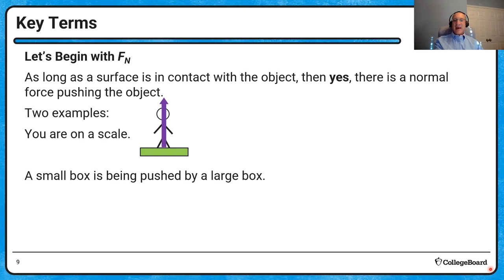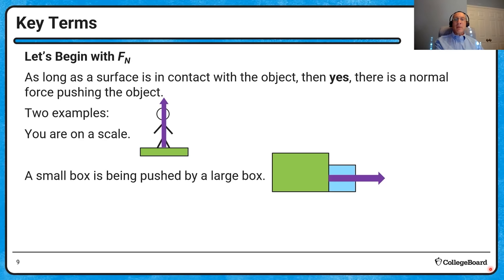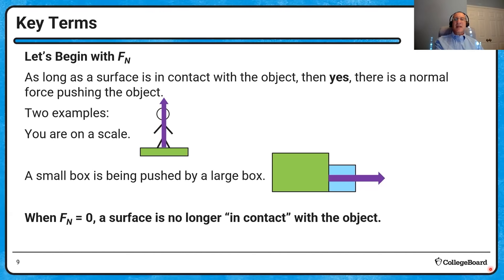You could also have a small box being pushed by a large box, showing that the normal force doesn't have to be directed upwards — it can be in any direction. As long as the normal force is greater than zero, the surface is in contact with the object. When the normal force becomes zero, the object has technically left the surface, even if you can't see it microscopically.